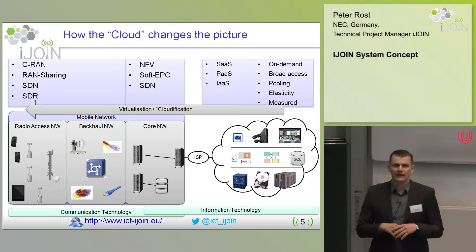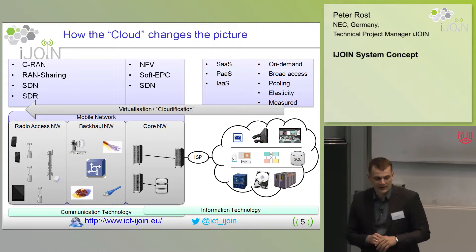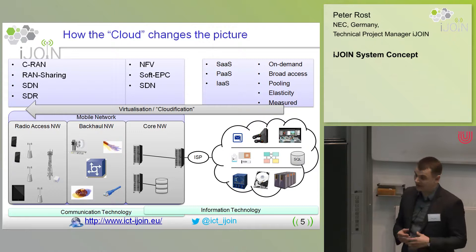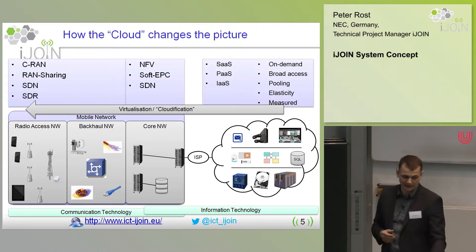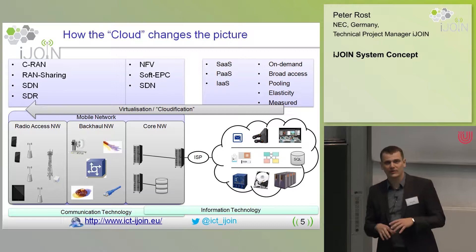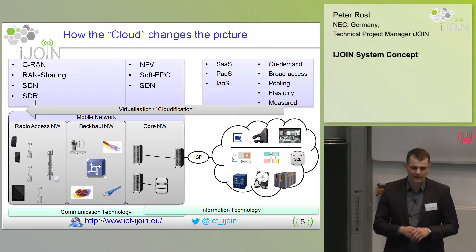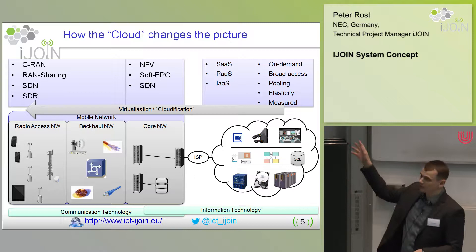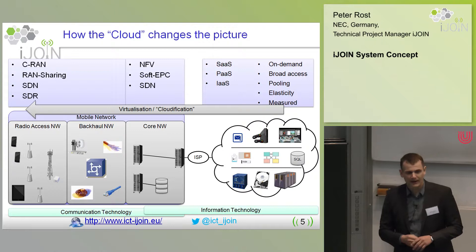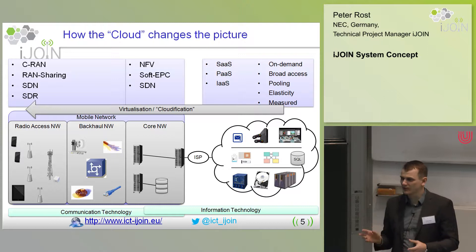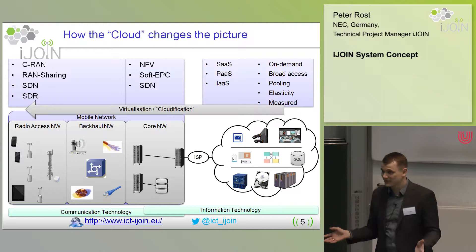There is a very active community in this area, particularly around virtual EPC and network functions virtualization (NFV). However, so far it has not received as much attention, product-wise, within the mobile network area or the backhaul network area. That's where iJoin gets in. We want to introduce a system concept able to leverage cloud computing concepts and make it better than existing systems like C-RAN based on CPRI, RAN sharing, SDN, and software-defined radio.